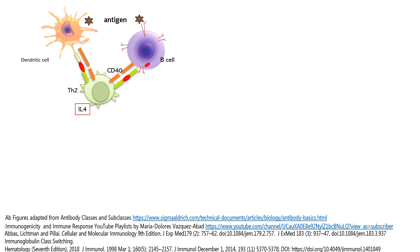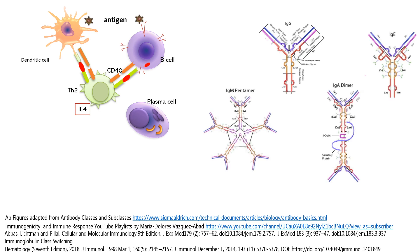This TH2 will produce interleukin-4 that eventually will differentiate the B cell lineage into the plasma cell that will produce the antibodies. They can be IgG, IgM, IgA, or IgE.